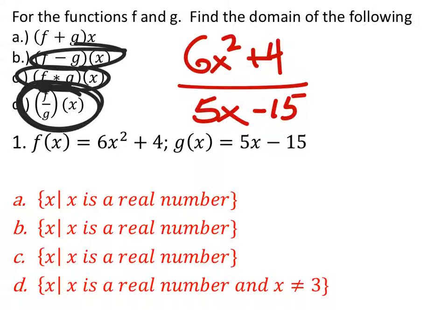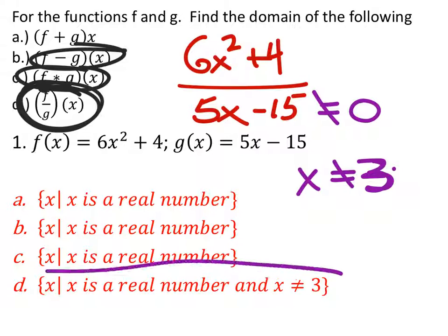Again, we're focusing strictly on the denominator because it can't equal zero. Let me get rid of that stuff. This cannot equal zero. So when I solve this, I get x cannot equal positive 3, and that's the way it shows here in set notation.